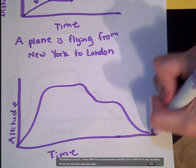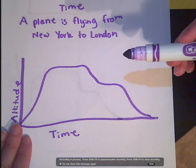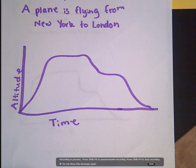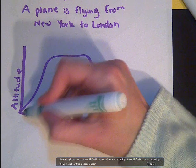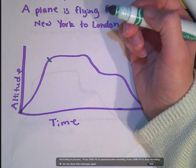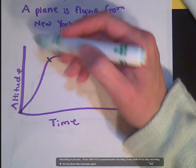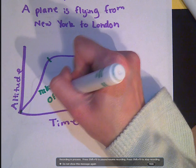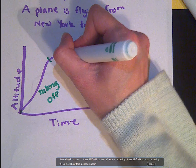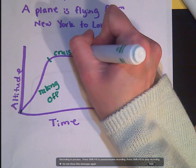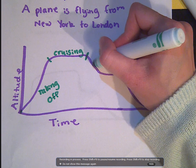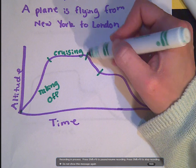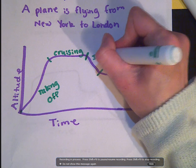If this graph represents a plane flying from New York to London — time on the x-axis and altitude on the y-axis — in the first section, the altitude is increasing, so this is where the plane is taking off. From there to the next section, altitude is fairly constant at the top — this is the cruising altitude. Then it slowly goes down somewhat but not all the way — this is an initial descent.